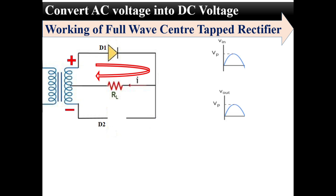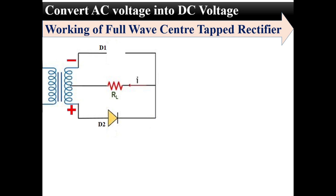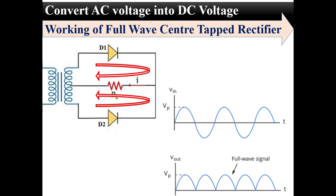For the negative half cycle, the polarity of supply will alternate. With respect to this polarity, diode D1 will be reverse biased and act as an open circuit, whereas diode D2 will be forward biased and conducting. So current will flow through diode D2 and load resistance, with the direction of current as shown. Notice that the direction of current in both cases is the same, so the output will be as shown in this waveform. In this way, the full wave rectifier converts AC voltage into DC voltage. Again, this is pulsating DC, which can be further converted into pure DC by using filter circuits.